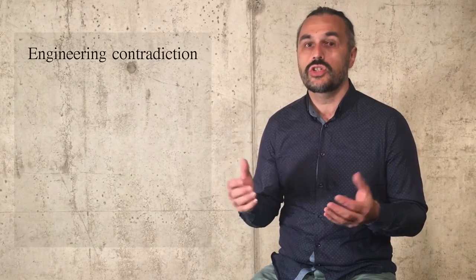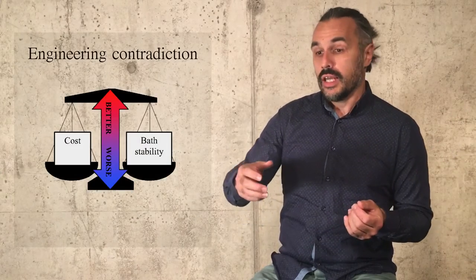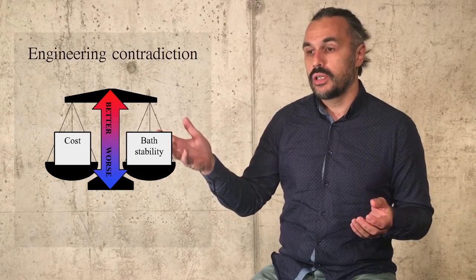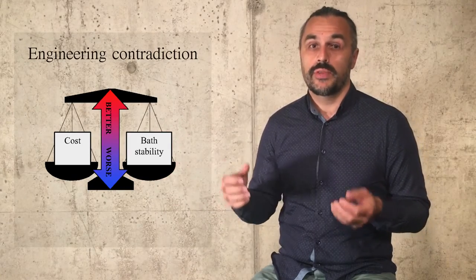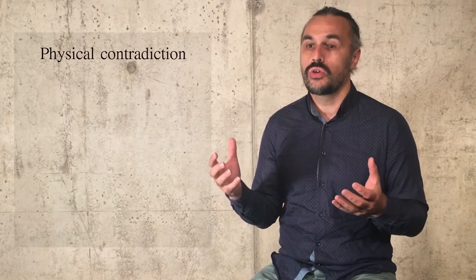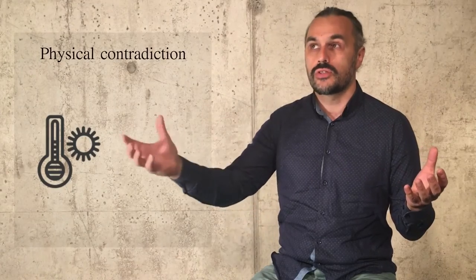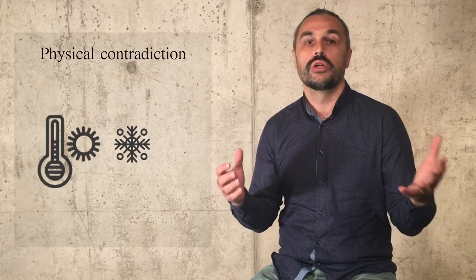There are two types of contradictions. I recommend starting with engineering contradictions — a situation when you try to improve one parameter of a system and another parameter or part of the system worsens. If you analyze more deeply, you arrive at a physical contradiction — a kind of screaming contradiction — a situation where you have justified requirements for opposite states of the same parameter: you want something to be long and short, warm and cold, and so on.